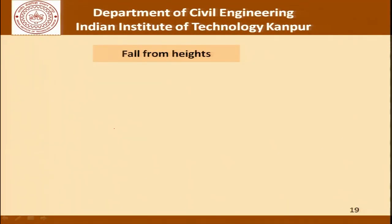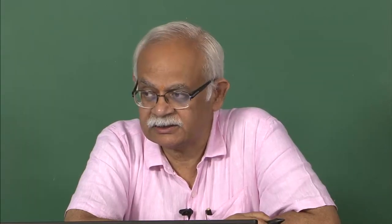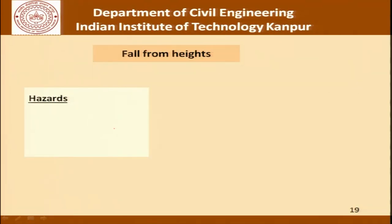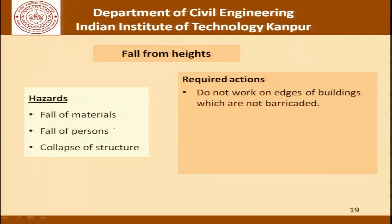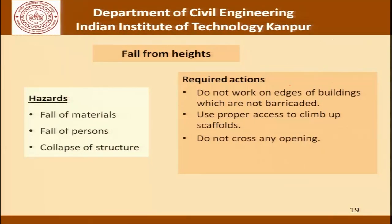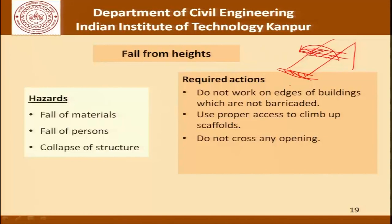Fall from heights is the highest killer in construction site accidents. Falls include fall of materials, fall of persons, and collapse of the structure itself. Required actions include: do not work on unbarricaded edges of buildings; use proper access to climb up the scaffold; do not try to cross or jump an opening. If an opening is large, management must ensure appropriate platforms are created at intervals so workers can move safely from one side to the other, with handrails and barricades.